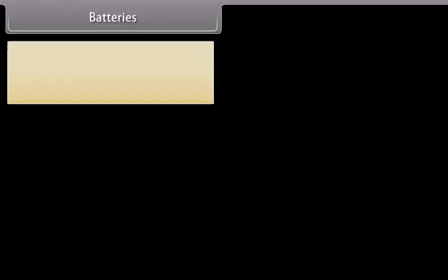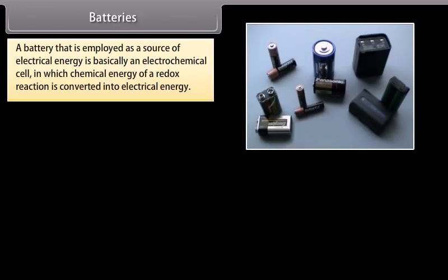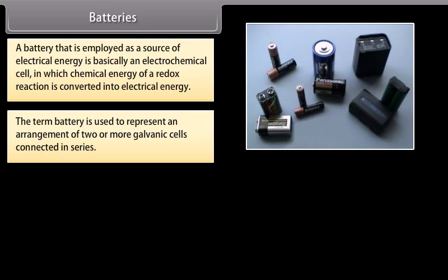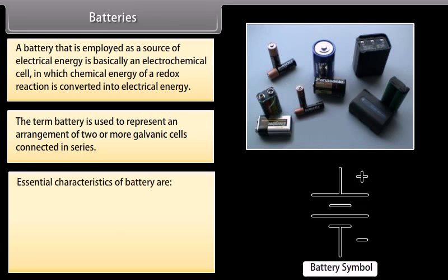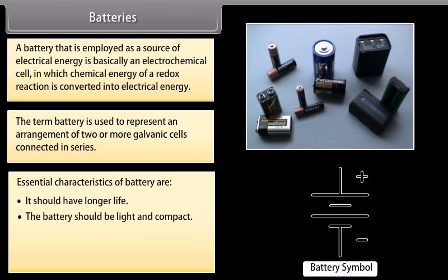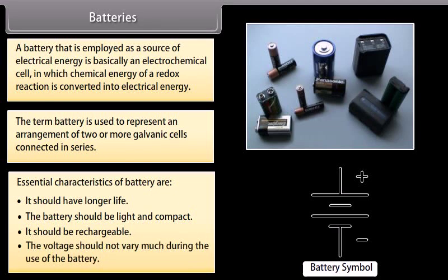Batteries. A battery that is employed as a source of electrical energy is basically an electrochemical cell in which chemical energy of a redox reaction is converted into electrical energy. The term battery is used to represent an arrangement of two or more galvanic cells connected in series. Essential characteristics of battery are: it should have longer life, the battery should be light and compact, it should be rechargeable, and the voltage should not vary much during the use of the battery.